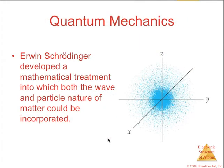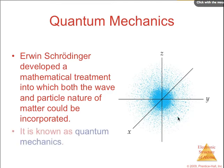Quantum mechanics, the latest model of the atom and how electrons are arranged around the nucleus, comes from Erwin Schrodinger who developed a mathematical treatment in which both the wave and particle nature of matter could be incorporated. This whole model is known as quantum mechanics.